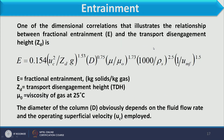Mathematically, entrainment is related by a dimensionless correlation that illustrates the relationship between fractional entrainment E and transport disengagement height z_e: E = 0.154 × [expression involving u_c (operating gas velocity), z_d (transport disengagement height), d (column diameter), µ (fluid viscosity), µ₀ (viscosity at 25°C), and U_MF (minimum fluidizing velocity)]. E is the fractional entrainment in kg of solid per kg of gas.